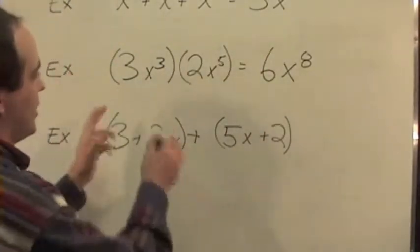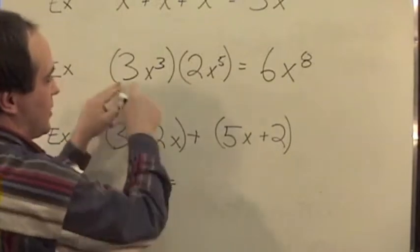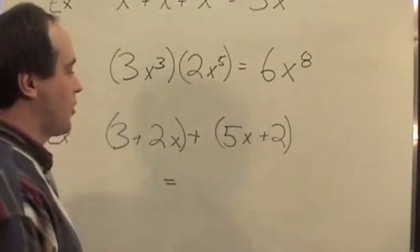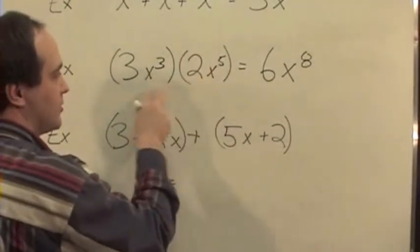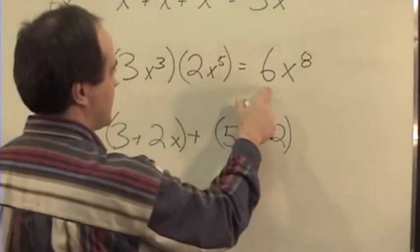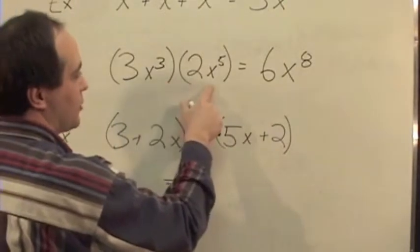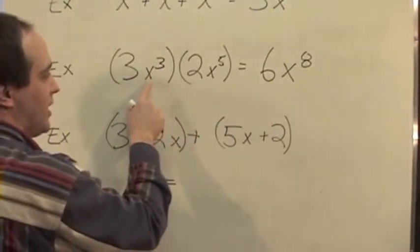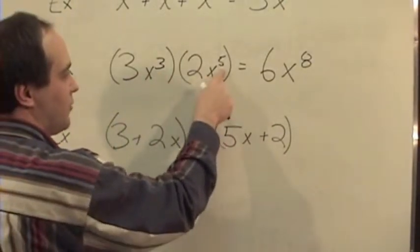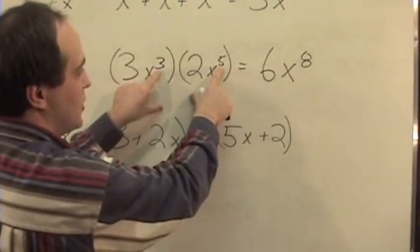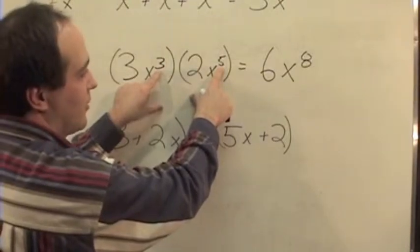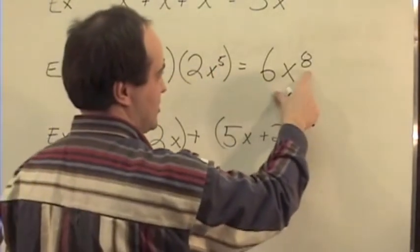We have now 3x cubed, there's another example, 3x cubed times 2x to the 5th. Now we know we take the constants out front, since these are all in terms of x, and we'll have 6 times, and then we multiply the x's together. When you multiply an x cubed to an x fifth, they're both the same variable to an exponent, so what you're doing is you add those exponents together, and we get 6x to the 8th.